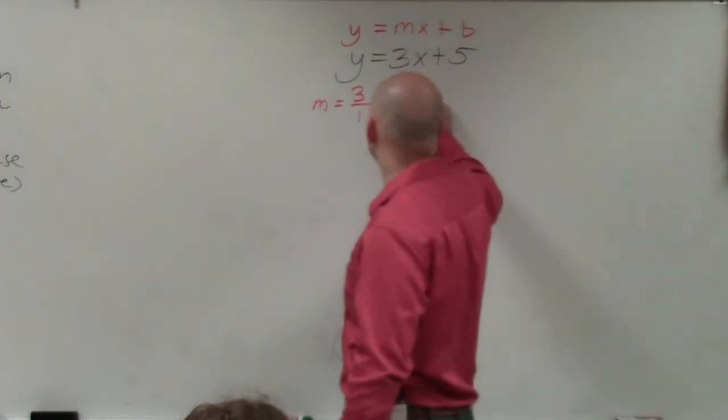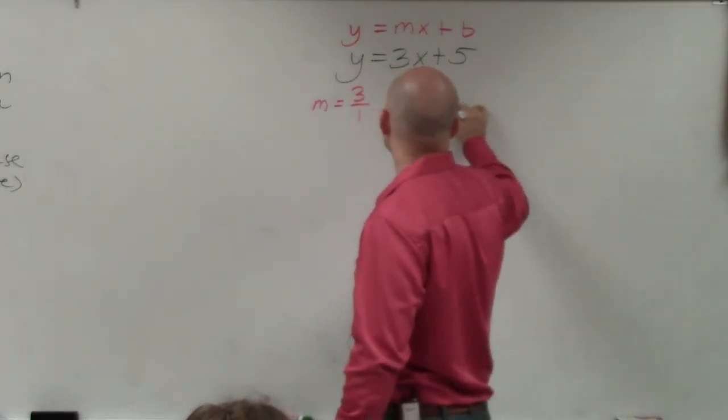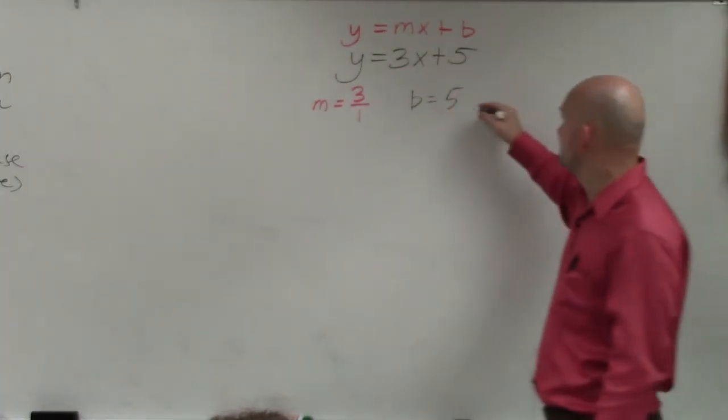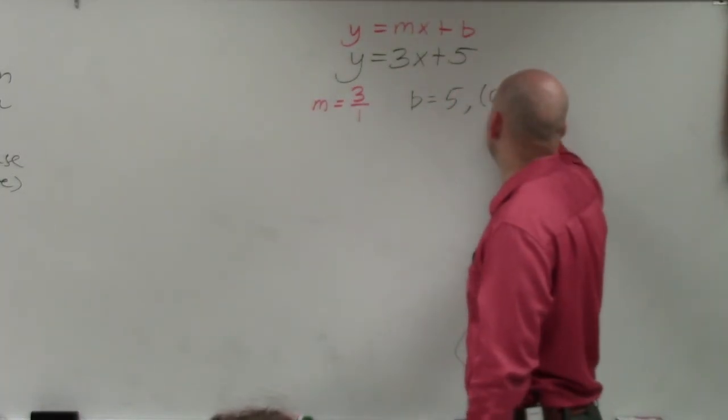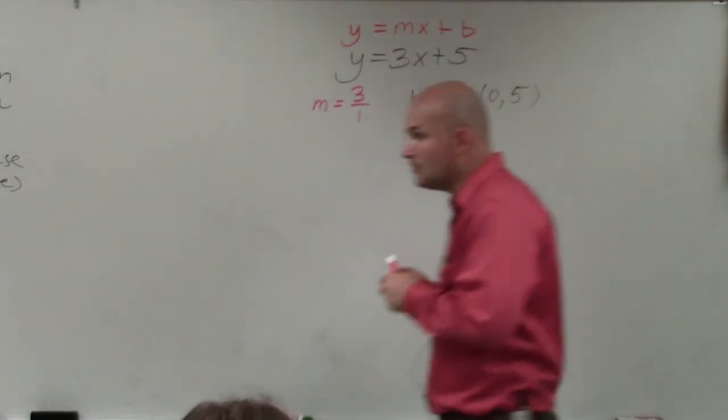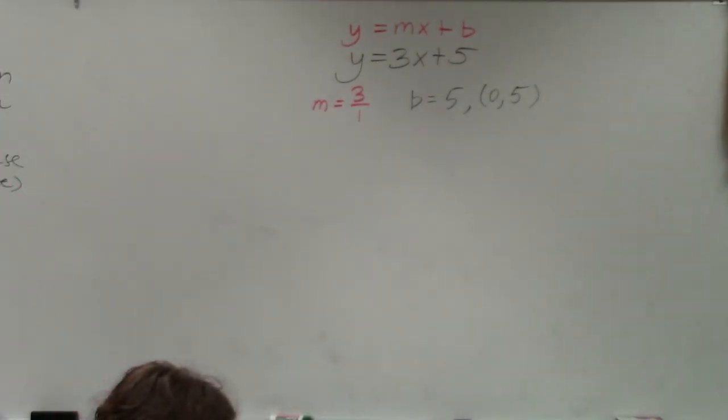And then for b, we could say that's going to be 5, but remember the y-intercept is a coordinate point. So I like to always write it as a coordinate point where the x value is going to be 0, and the b value is going to be your value on the y-axis.